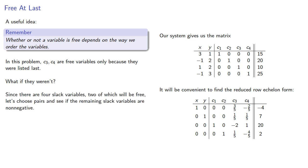Since there are four slack variables, two of which will be free, let's choose pairs and see if the remaining slack variables are non-negative.